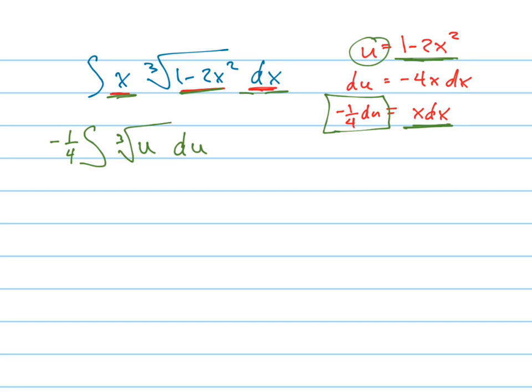So there's my new equation, my new integral, which now I know how to integrate that because that's just the same as negative 1 fourth times the integral of u to the 1 third du.